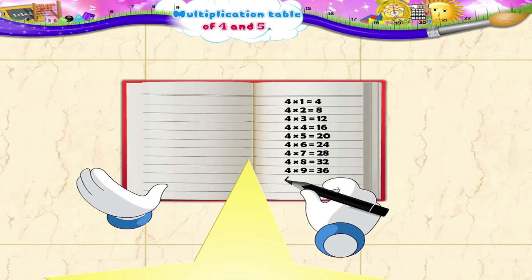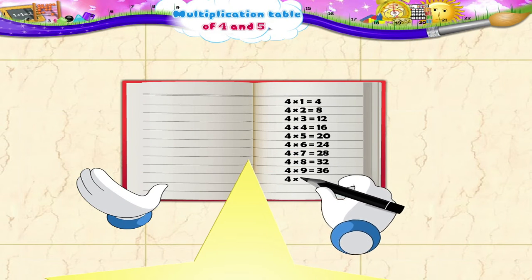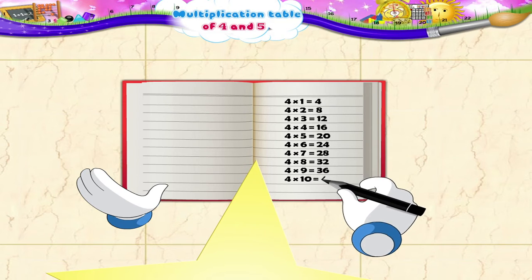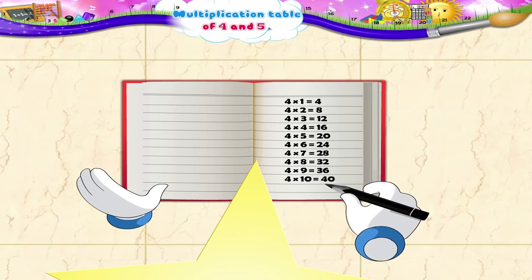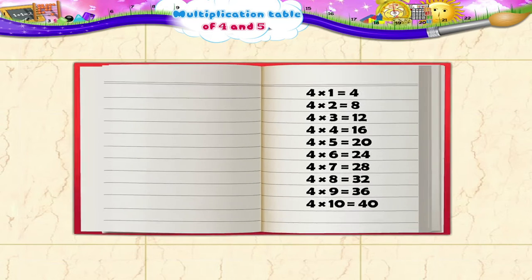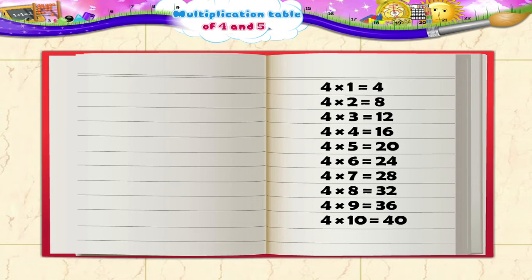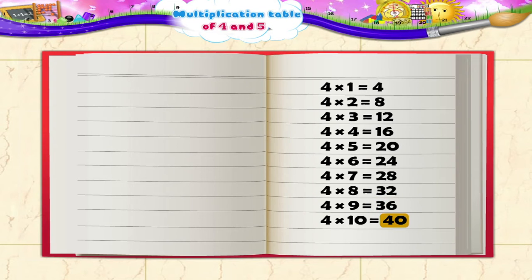Are you now ready to read the four times table story? Okay, so what number will come after four? Yes, eight. After eight, it is twelve. Then sixteen, twenty, twenty-four, twenty-eight, thirty-two, thirty-six, and then forty.